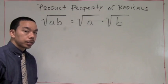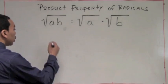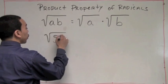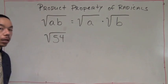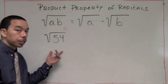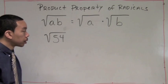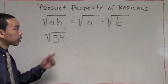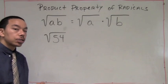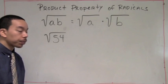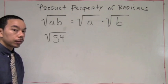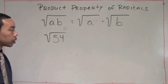Let's try another example. If we have the square root of 54, we know that 54 is not a perfect square — it's not on our list. However, we can still simplify this. We ask ourselves: what is the largest perfect square that goes into 54?